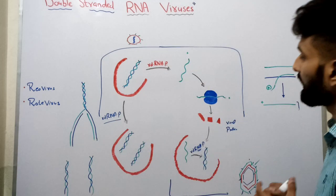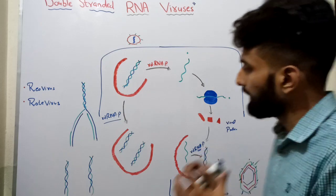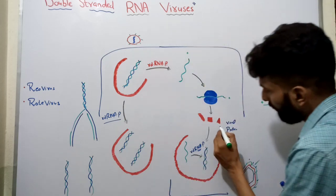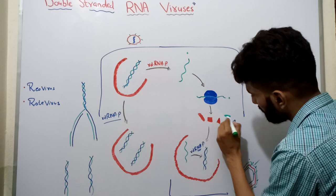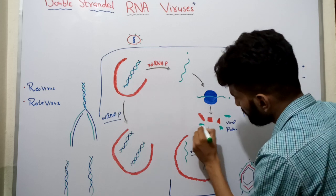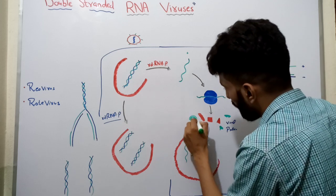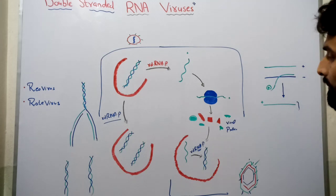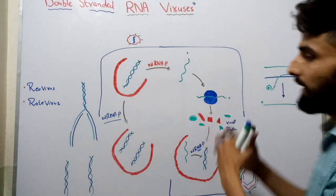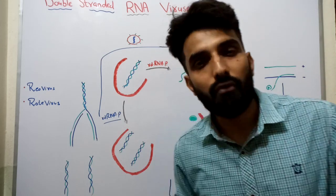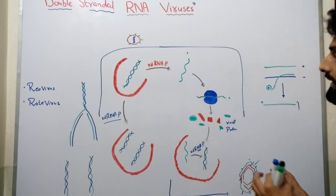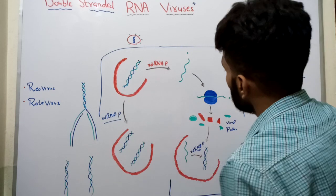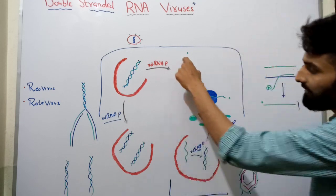This positive RNA will attach to the host ribosome, and the process of translation will take place, producing different viral proteins.